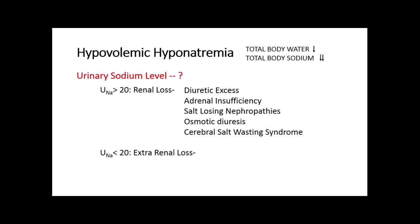Causes of renal sodium loss include: diuretic excess (iatrogenic hypovolemic hyponatremia), adrenal insufficiency where aldosterone is insufficient to absorb sodium, salt-losing nephropathies like reflux nephropathy, interstitial nephropathy, post-obstructive uropathy, medullary cystic disease, recovery phase of acute tubular necrosis, osmotic diuresis in diabetes mellitus (glycosuria), starvation and diabetic ketoacidosis (ketonuria), and renal tubular acidosis and metabolic alkalosis (bicarbonaturia).